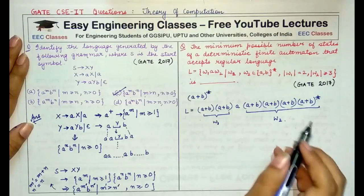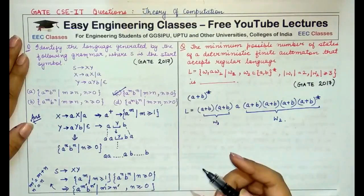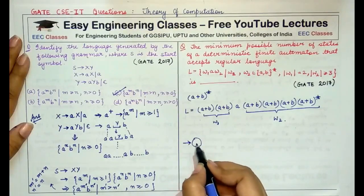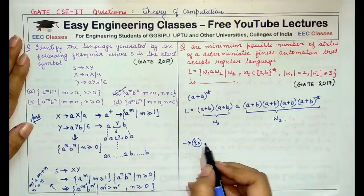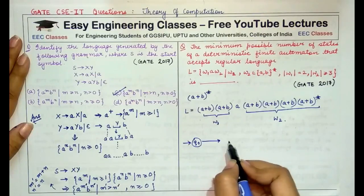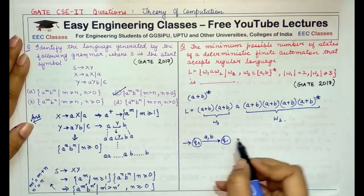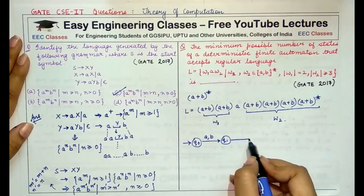The minimal DFA that would be formed by this language would be starting with state Q0. I would go to state Q1 with A, B. That means a single character of W1.